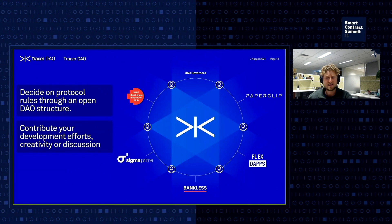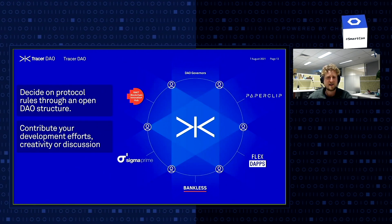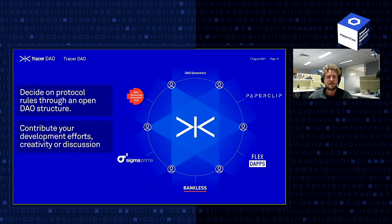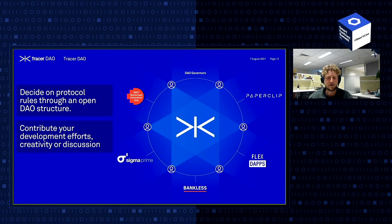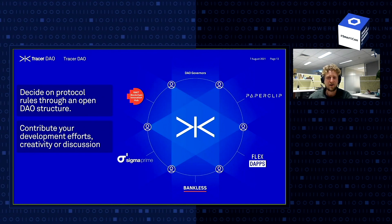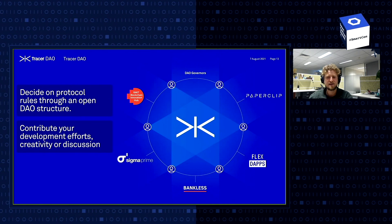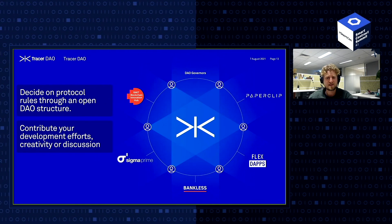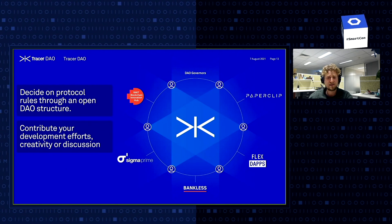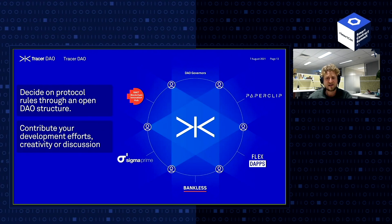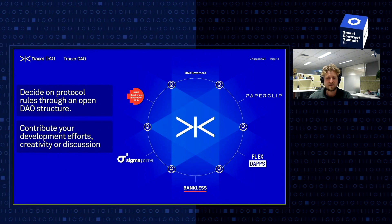Tracer DAO has existed on chain since the start of last year. Since then, Tracer DAO has developed relationships with a variety of ecosystem contributors. We have hundreds of protocol governors already, and this will continue to grow. It's clear that DAO-based organizations are the future. Tracer DAO provides a platform for its governors and users to vote on different contract rules. This ultimate level of transparency and democratic decision-making will guide a more fair and trusted financial system moving forward.